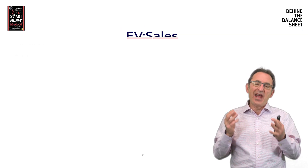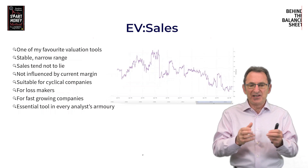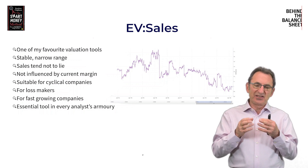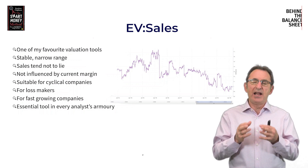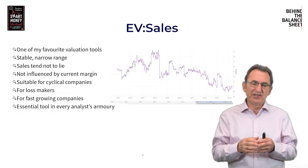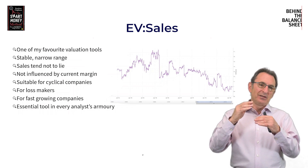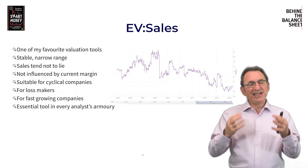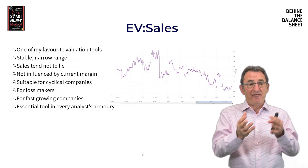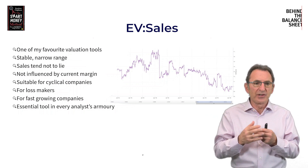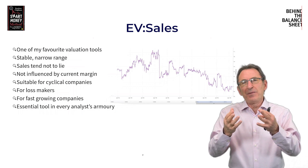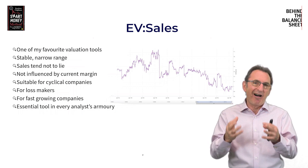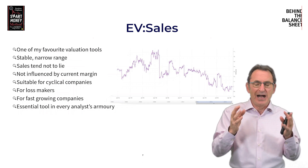But my favourite one is EV to sales. The reason I think this is such a great valuation tool is the sales number rarely lies. Companies can be aggressive in their accounting — they can fabricate sales or bring forward sales — but apart from an outright fraud, the sales number tends to lie less than the earnings.